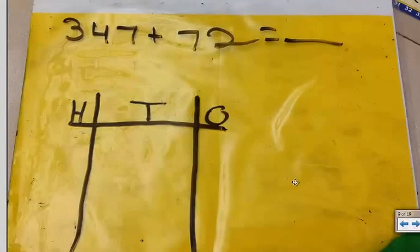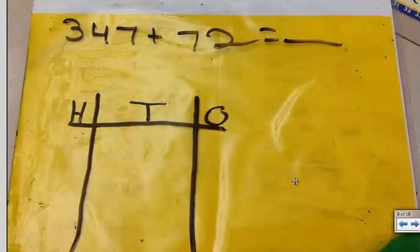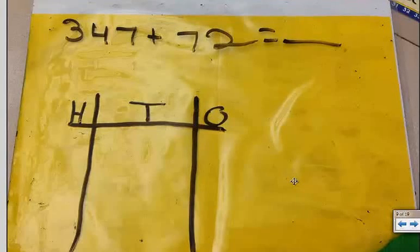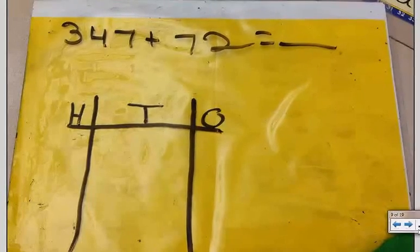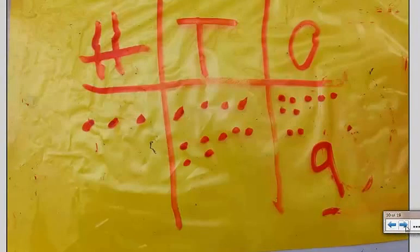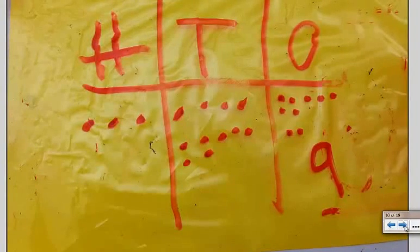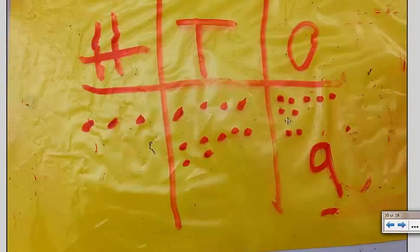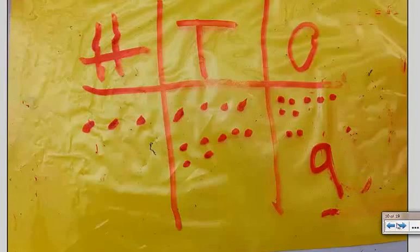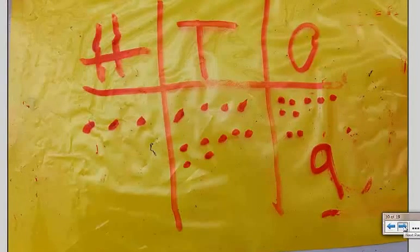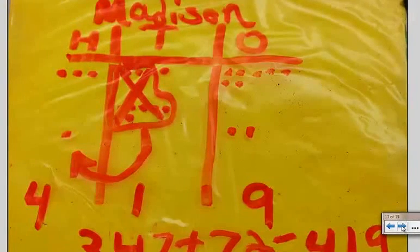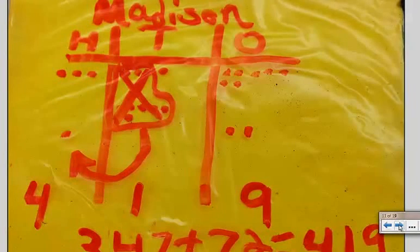Similarly, we can look at this process on paper. This is 347 plus 72. The first thing I set up is my HTO for hundreds, tens, and ones. This student does an excellent job of drawing out their hundreds, tens, and ones. And really the key is when you're drawing ones, you want to group them in fives, because fives and tens become an easy way to add and bundle things.